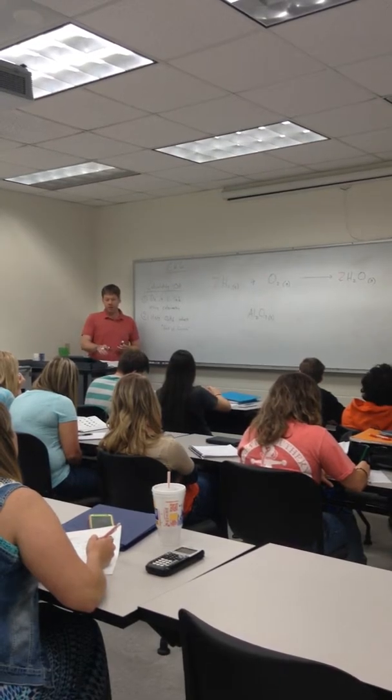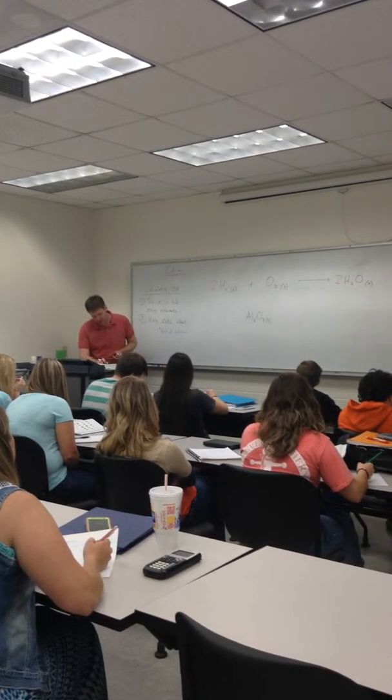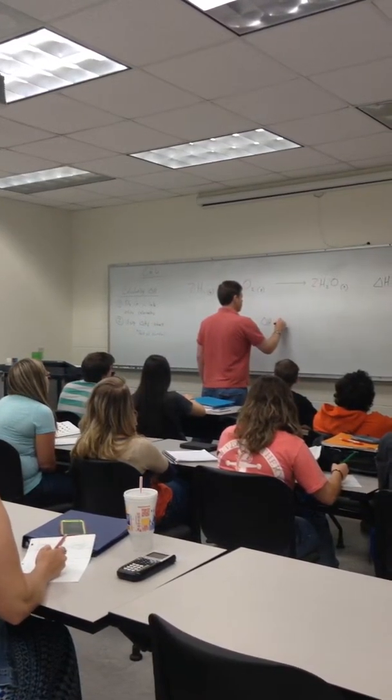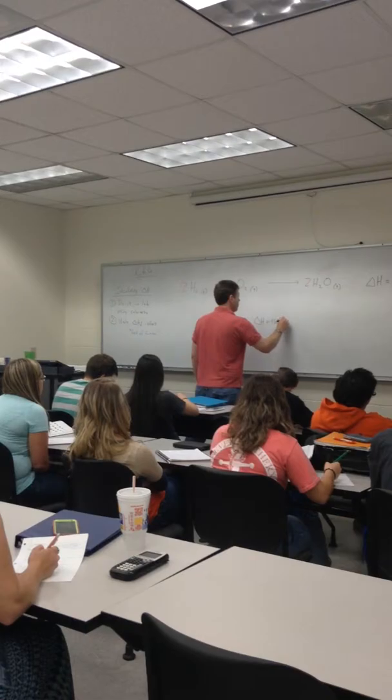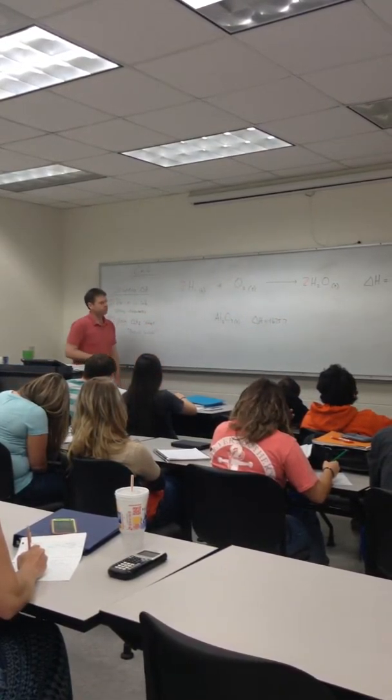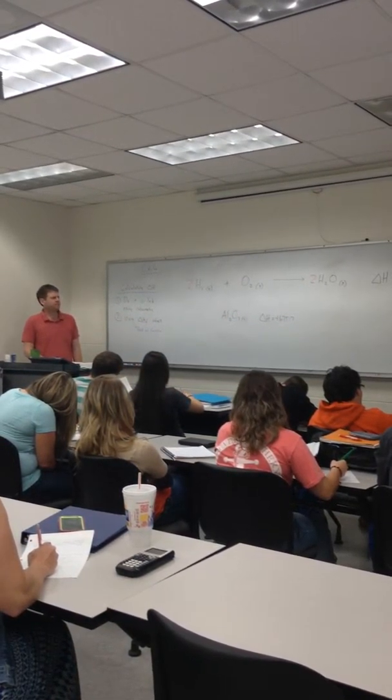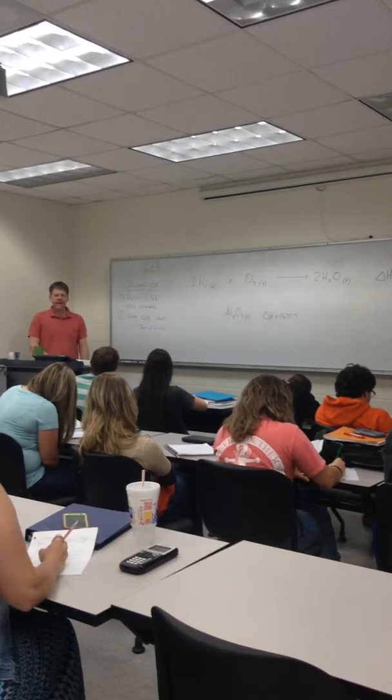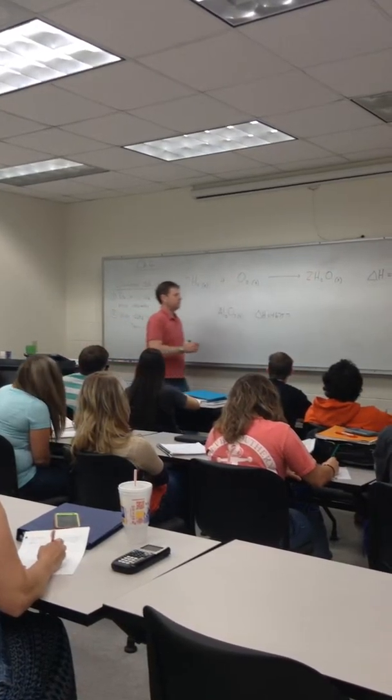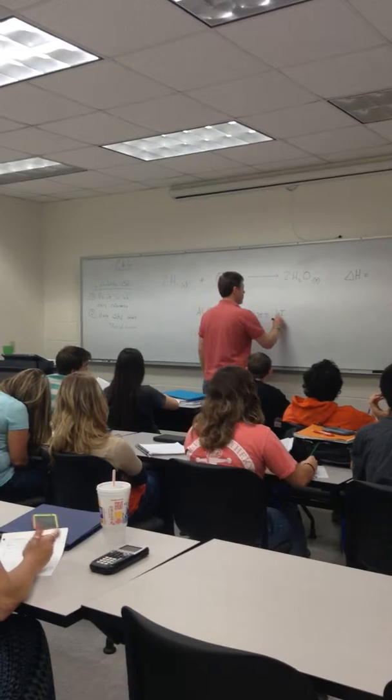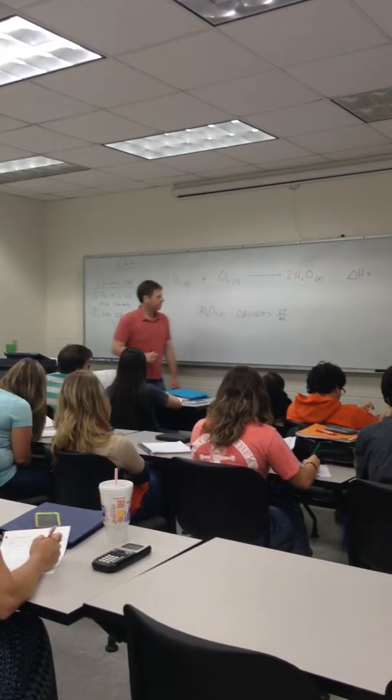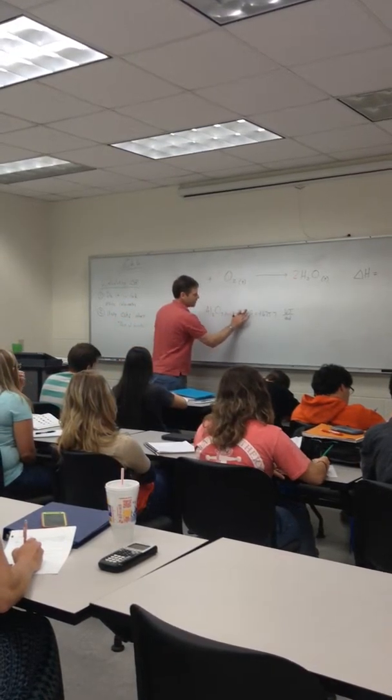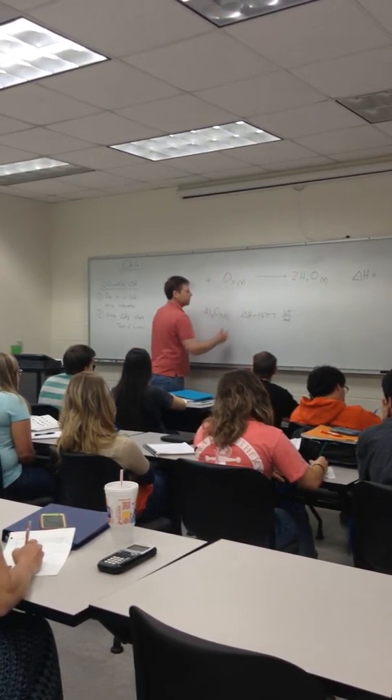We're going to focus in Gen Chem 1 on that delta HF value, which, notice, is a negative 1675.7. What are the units for that? We'll look up at the top there. Delta HF, turns out all these values are kilojoules per mole. I'll get to that in a second. First, I'm going to correct my delta. That's a sad delta.